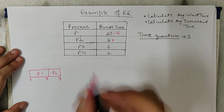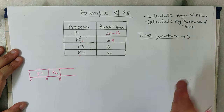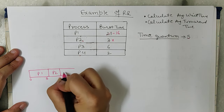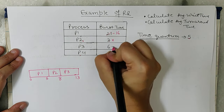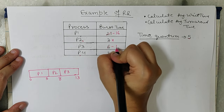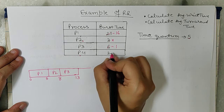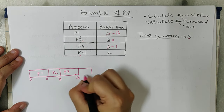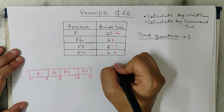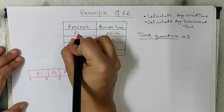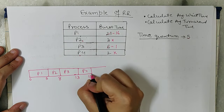Now it's P3's turn. P3 will get the CPU for 5 minutes: 8 plus 5 equals 13, and its remaining time is 1 minute — it needs the CPU for just 1 more minute. Now it's P4's turn. P4 only needs the CPU for 2 minutes, so 13 plus 2 equals 15. P4 is done.